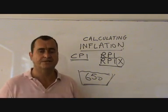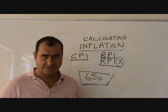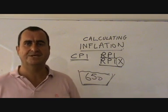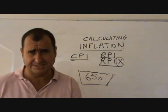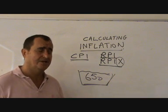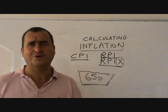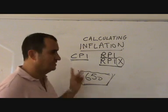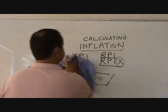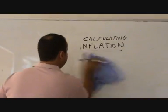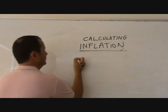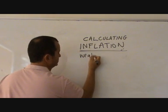That's how it's calculated, and the figures are published once every month. We can see from the 12 months leading up to that month whether there has been a rise in prices. Now let's go through four of the weaknesses of this system. There are four serious weaknesses.